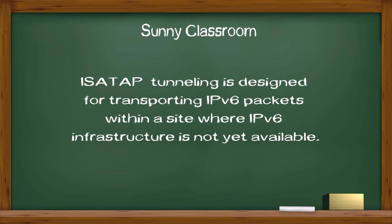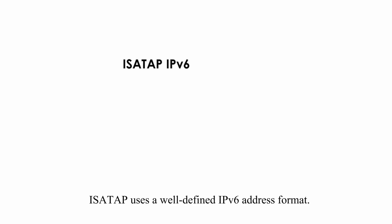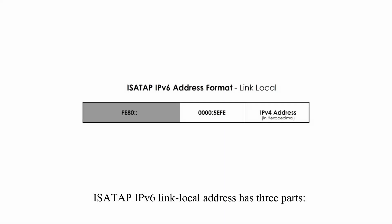ISATAP tunneling is designed for transporting IPv6 packets within a site where IPv6 infrastructure is not yet available. ISATAP uses a well-defined IPv6 address format. The ISATAP IPv6 link local address has three parts.